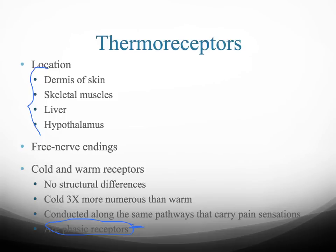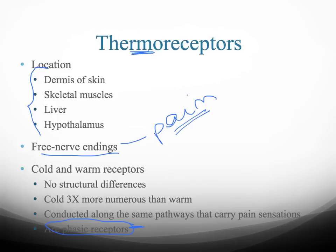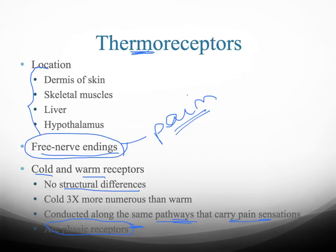The receptor receiving temperature differences is the free nerve ending, which also carries pain information. That's why extreme temperatures can cause a lot of pain. There are two types of thermal receptors — cold and warm — and a combination of both gives you every temperature in between. There are no structural differences between them; however, you have three times more cold receptors than warm receptors. Both run through the same pathway as pain sensations because they use the same type of receptor.